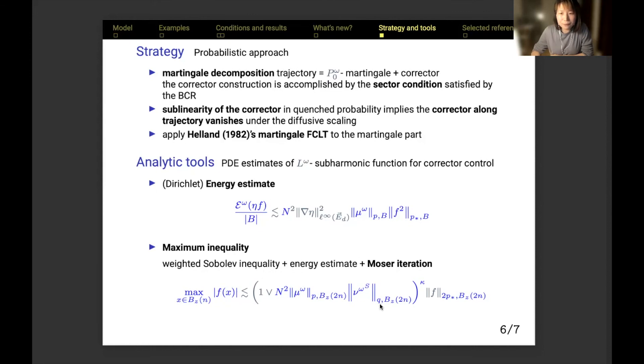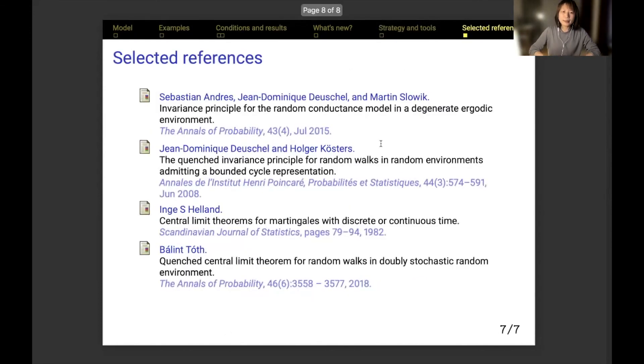To summarize the talk in one sentence, we use probabilistic approach and analytic tools to prove quenched functional central limit theorem for random walks in bounded cyclic non-reversible random environments that is particularly not uniformly bounded and not uniformly elliptic. With the last slide showing a very short list of the references I used in this presentation, I end my talk here. Thank you very much for watching this video. Goodbye and looking forward to meet you at the online conference.